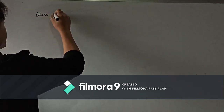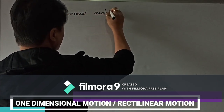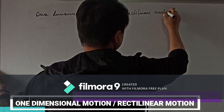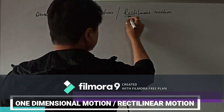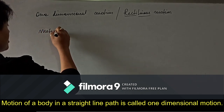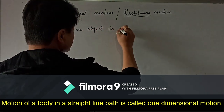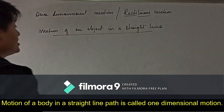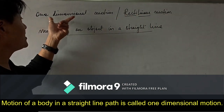One dimensional motion is also called rectilinear motion. 'Rectilinear' means straight line — 'recti' means straight and 'linear' means line. So rectilinear motion is the motion of an object in a straight line.